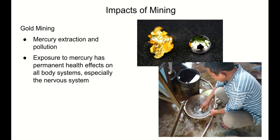Another method of gold purification involves mercury. Mercury dissolves gold, allowing it to be separated from rock material; then the mercury is boiled off — it has a very low boiling point — leaving pure gold. This is used frequently in artisanal small-scale gold mining. However, mercury is a potent neurotoxin and exposure has permanent health effects on all body systems, especially the nervous system, and can cause irreparable brain damage.